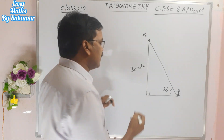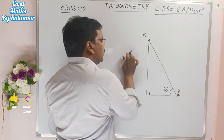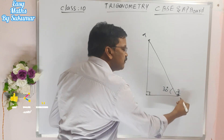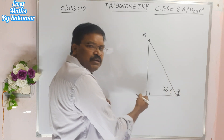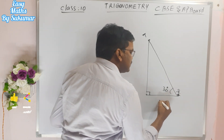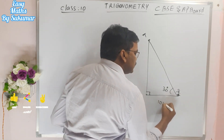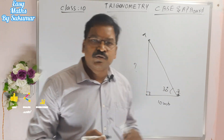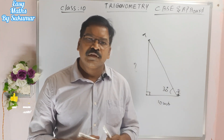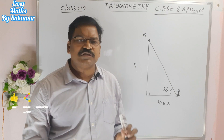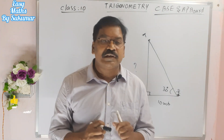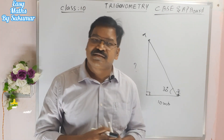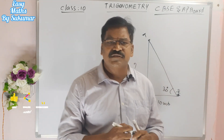Even if the distance between you and the bottom of the building is given — say 10 meters — then you can find the height of the building using Trigonometry. The main application of Trigonometry is to find heights and distances.